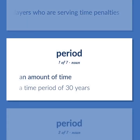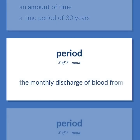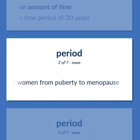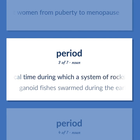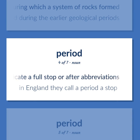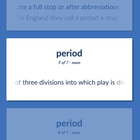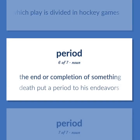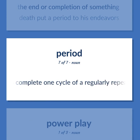Period: an amount of time; a time period of 30 years. The monthly discharge of blood from the uterus of non-pregnant women from puberty to menopause. A unit of geological time during which a system of rocks formed — 'Ganoid fishes swarmed during the earlier geological periods.' A punctuation mark placed at the end of a declarative sentence to indicate a full stop, or after abbreviations — 'In England they call a period a stop.' Ice hockey: one of three divisions into which play is divided in hockey games. The end or completion of something — 'Death put a period to his endeavors.' The interval taken to complete one cycle of a regularly repeating phenomenon.